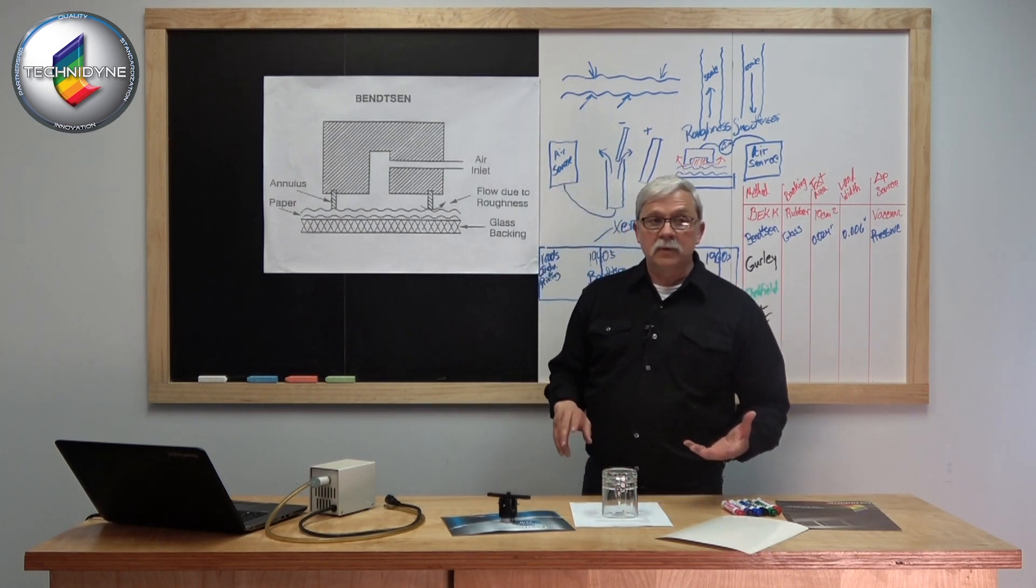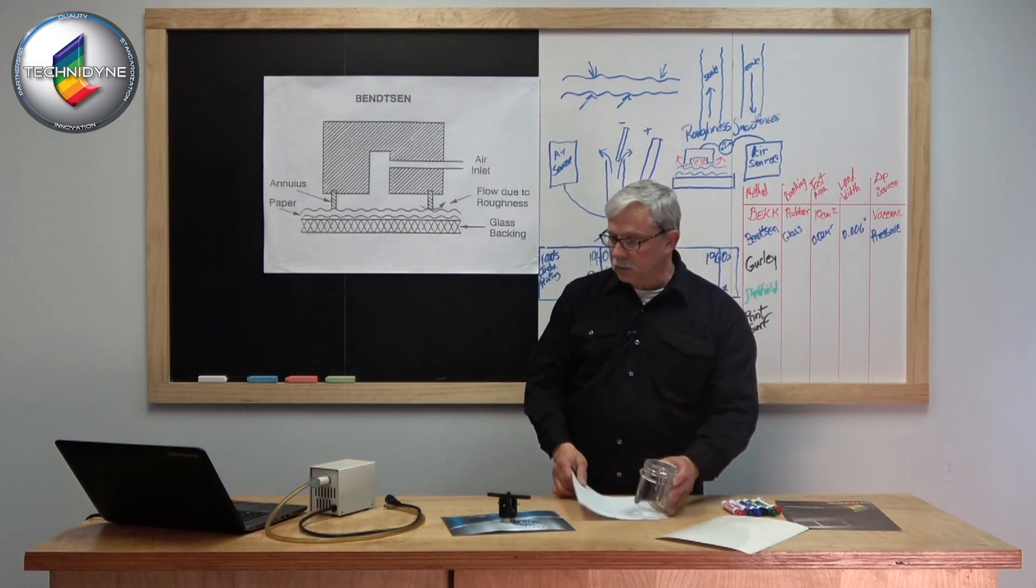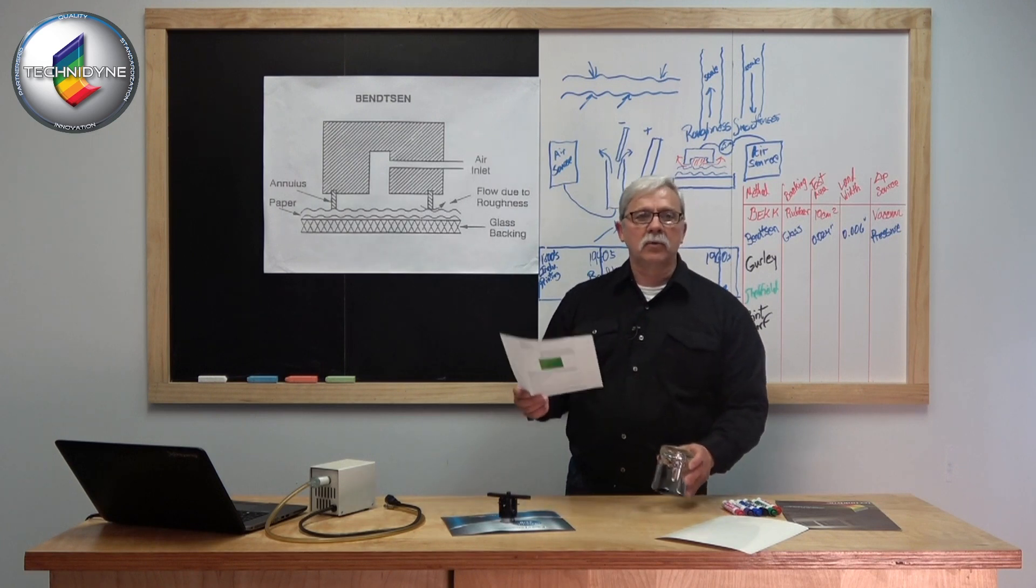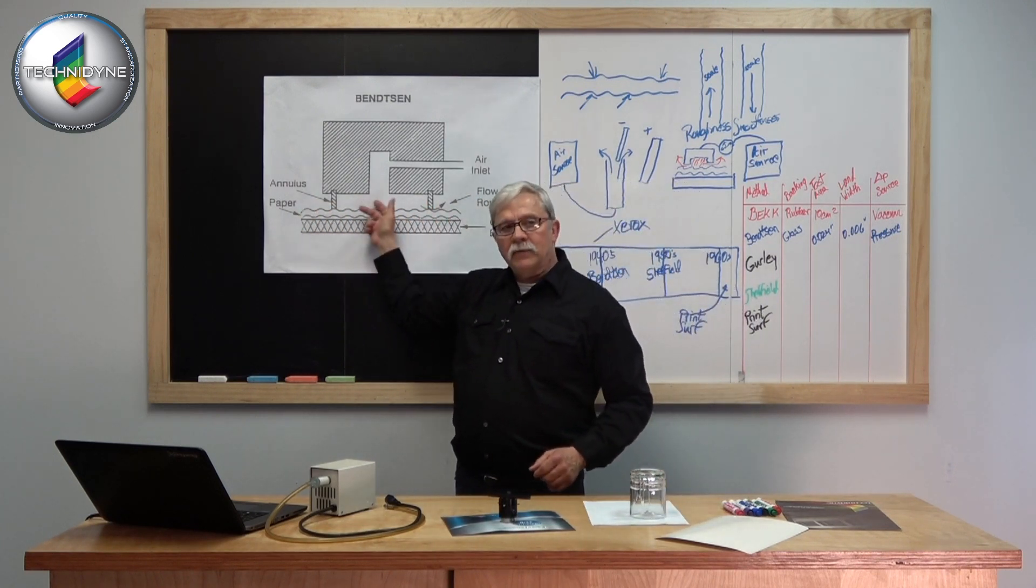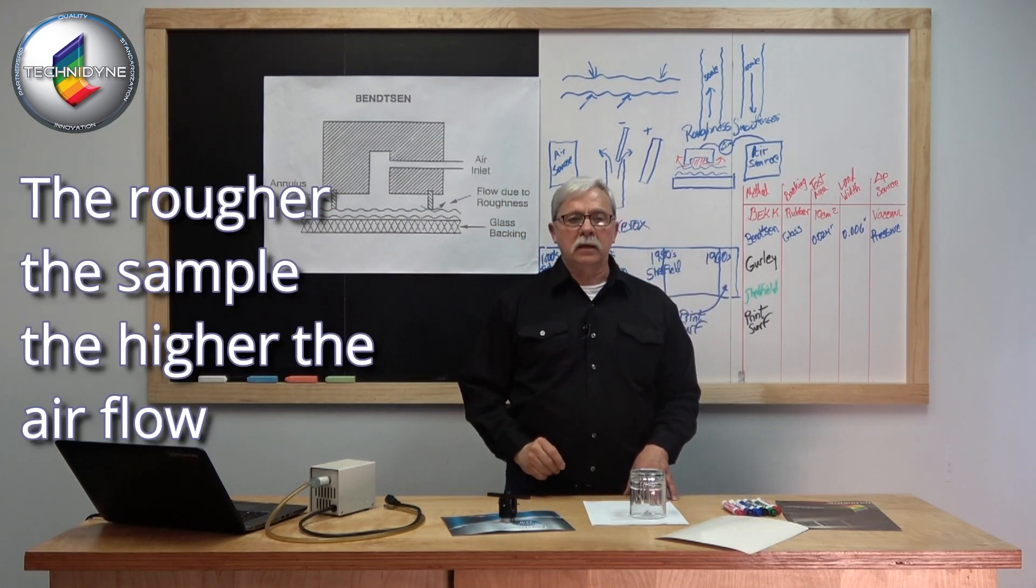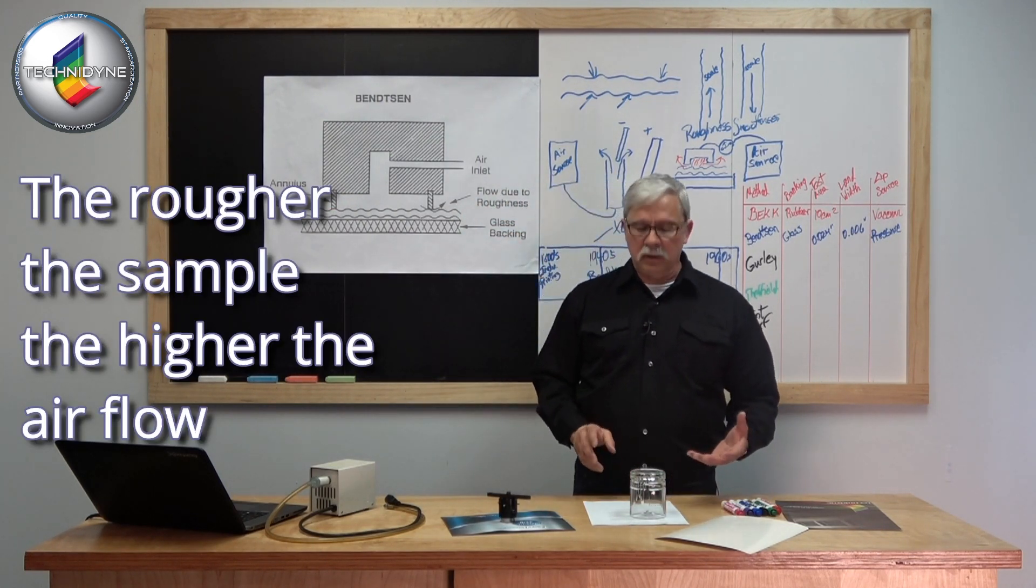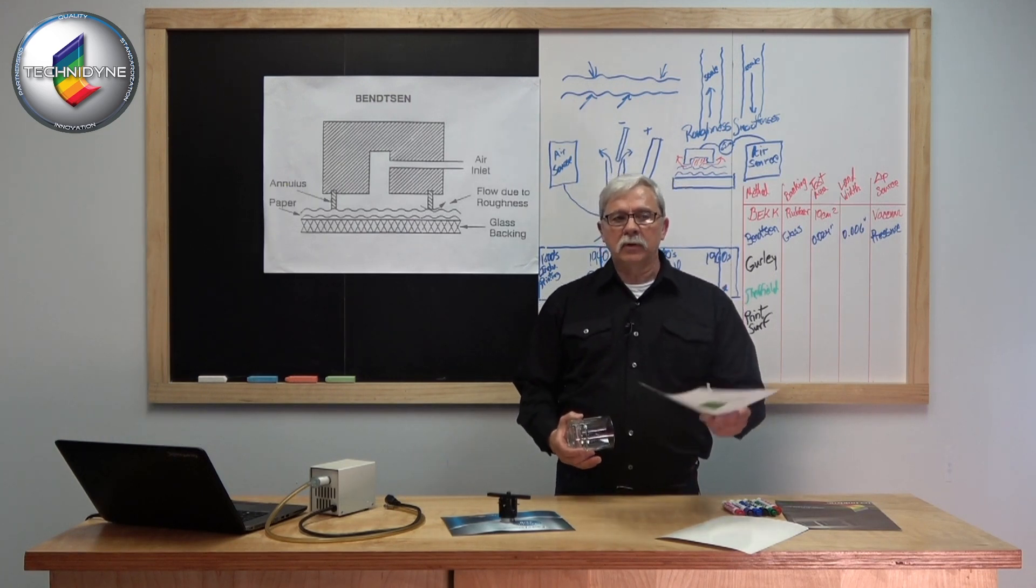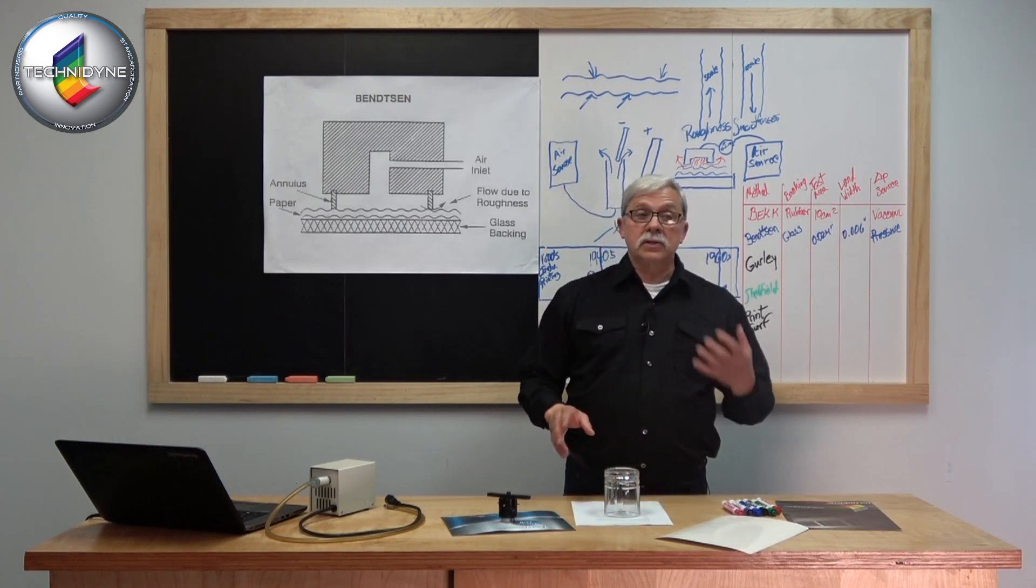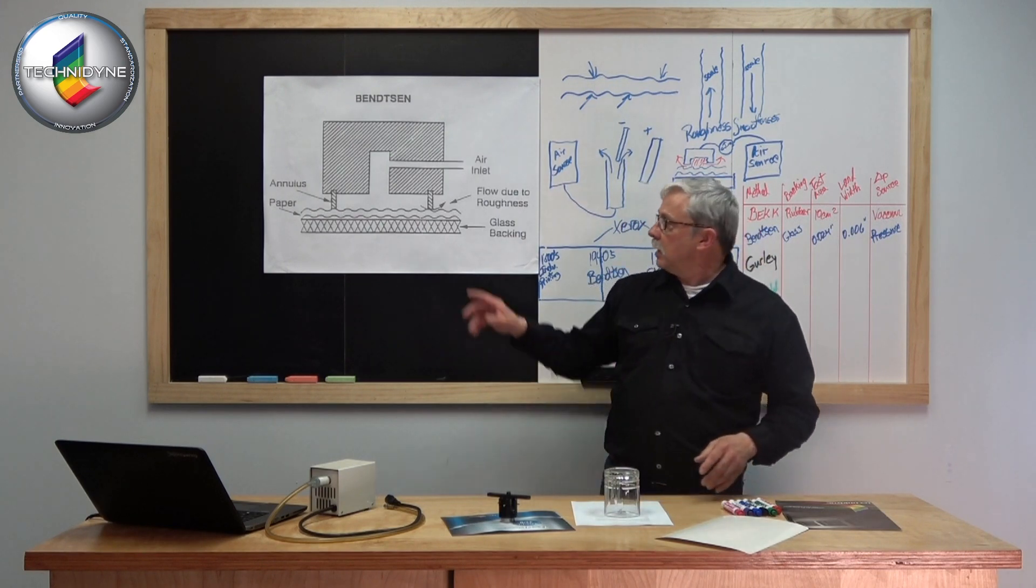If I've got a very rough sample, like linerboard, I'm going to essentially have a fair amount of leakage out from underneath this metering land, and we're going to be measuring it with engineering units.